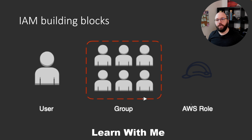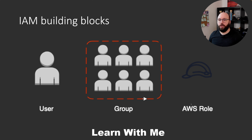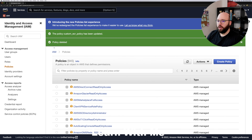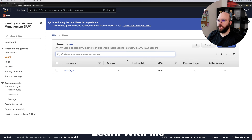Now let's go through the graphical user interface in our web browser and see how we can create a user, create a group, and assign them. Back in my AWS portal, I'll go to Users, where I can see I have one single user available. I'm going to add another user.